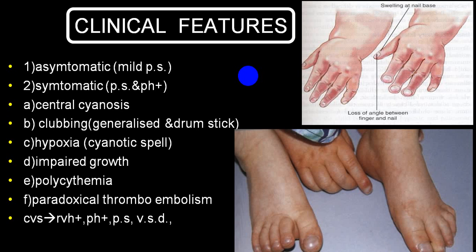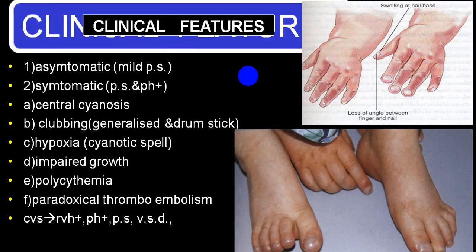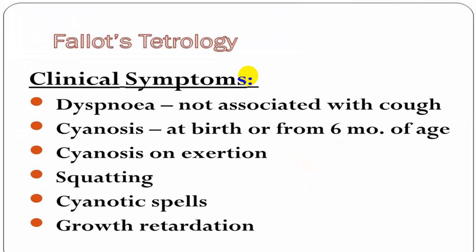The patient can develop infective endocarditis, and secondary to this, paradoxical thromboembolization. Because of increased afterload on the right ventricle, depending on severity, they develop pulmonary hypertension, right ventricular hypertrophy, and symptoms of right-sided congestive cardiac failure. Dyspnea, cyanosis worsening on exertion, cyanotic spells or tet spells, and growth retardation are typical features. Squatting posture relieves the hypoxia.